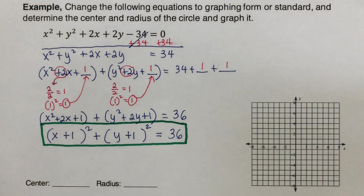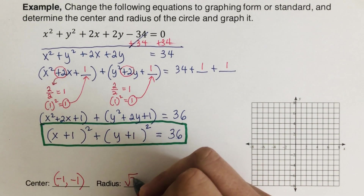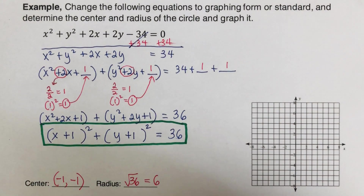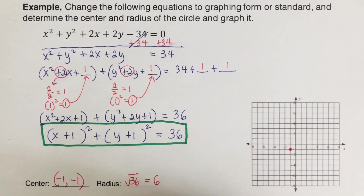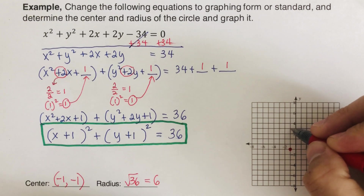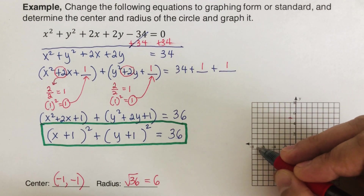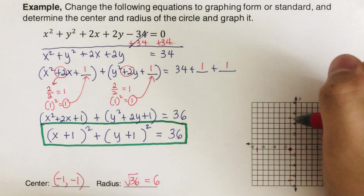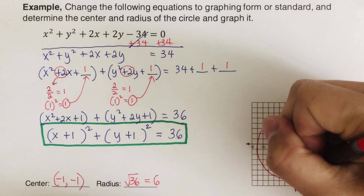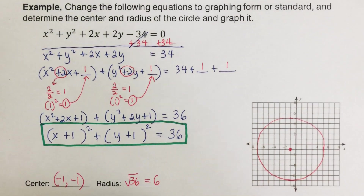From this equation the center of the circle is (negative 1, negative 1) — we switch the signs — and the radius is the square root of 36, which is 6. We plot the center at (negative 1, negative 1), then count 6 units up, down, left, and right to find the four key points: 1, 2, 3, 4, 5, 6 in each direction. Then we sketch the circle through those points. The radius is 6 on all sides.